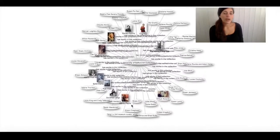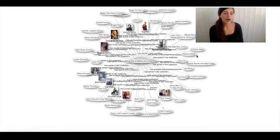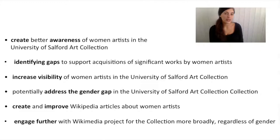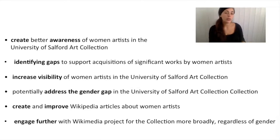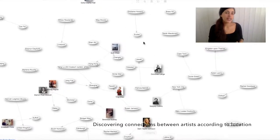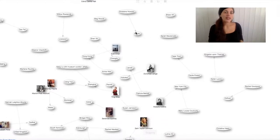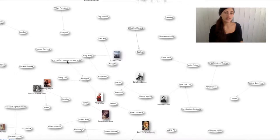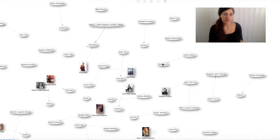In conclusion, through the work I have conducted on this project, I have aimed to show how use of Wikidata can help art collection managers keep track of the collection. Specifically, I have shown a method to create better awareness of women artists, identify gaps, increase visibility, potentially address the gender gap in the collection, and create and improve Wikipedia articles about women artists, engaging further with Wikipedia projects for the collection more broadly, regardless of gender. Analysis of this data enables collection managers to get a fuller picture and work towards specific goals within their collection, such as achieving gender balance or addressing historical gaps.